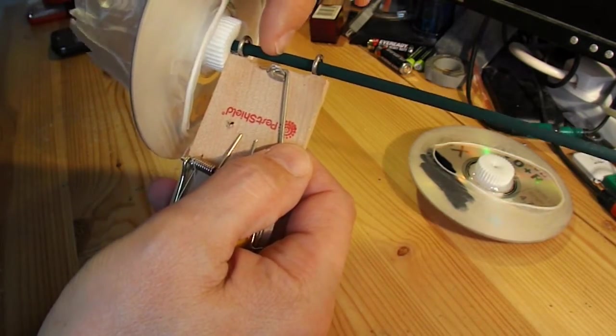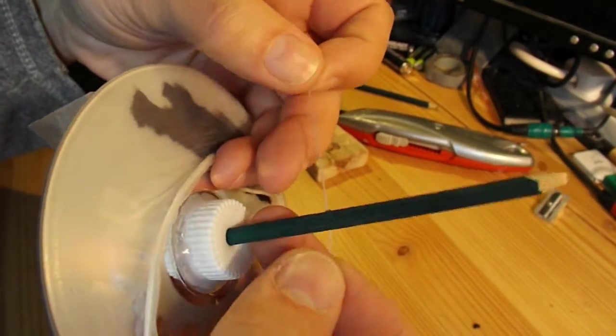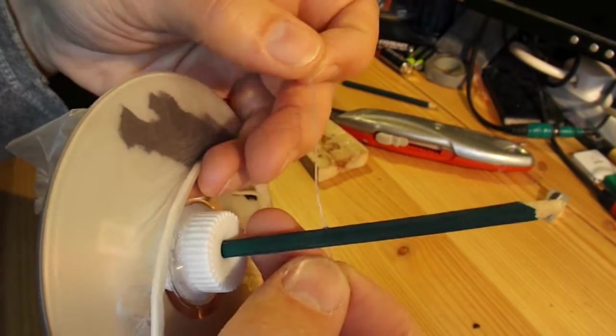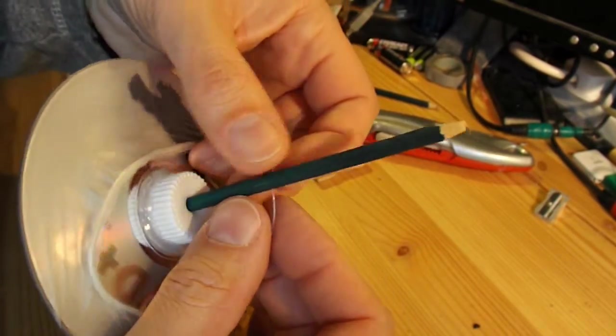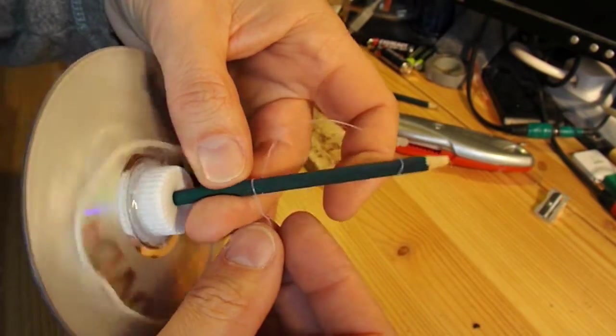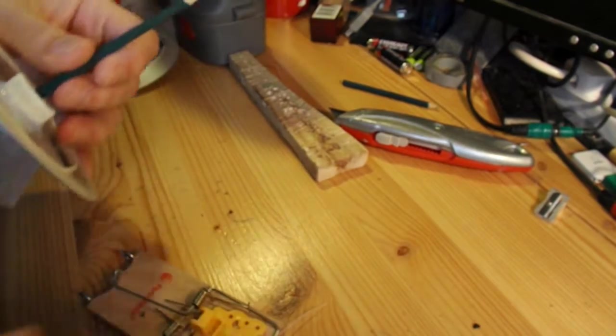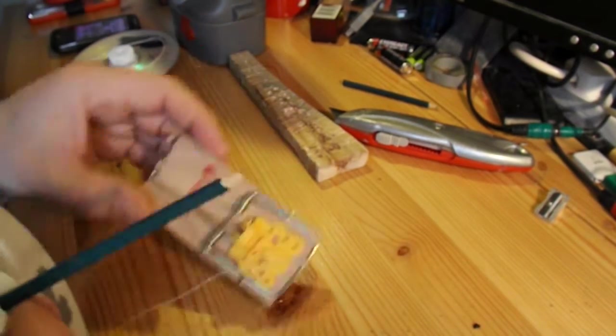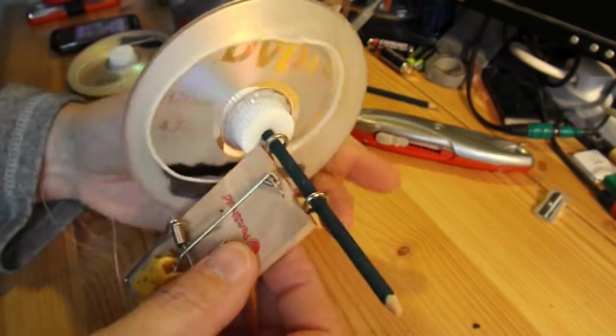I need to drill a small hole through the middle there. Just use my smallest drill bit to drill the hole through the axle. That will hold the fishing line in place while we wind it up. So, through there.